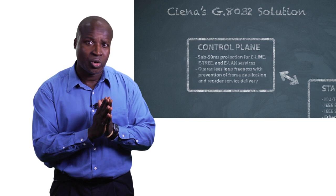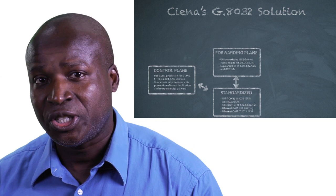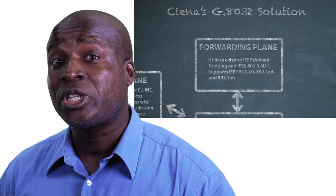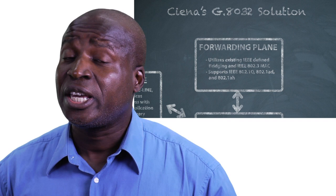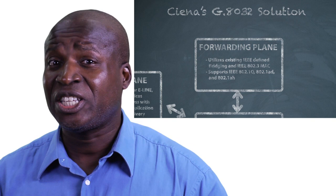From a forwarding plane dimension, G8032 can be supported with encapsulations that support .1Q or could support a .1AD, a Q-in-Q encapsulation, or could support a .1AH, a MAC-in-MAC type of encapsulation. So the flexibility is there. It could fit into the provider's needs depending upon what type of encapsulation technique they have in their network.